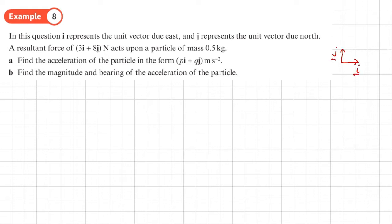A resultant force of (3i + 8j) Newtons acts upon a particle of mass 0.5 kg. Find the acceleration of the particle in the form (pi + qj) meters per second squared.